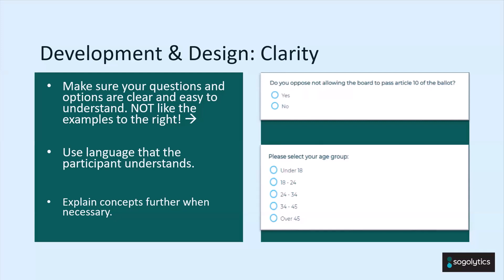For the bottom question, it's more about the answer choices. You always want to make sure you're allowing participants to select a clearly defined answer. For example, if someone is 24 or 34 years old, which option should they choose? You never want to put participants in a scenario where, given a single-select radio button, there is ambiguity. Make sure they have a clearly defined answer to select.